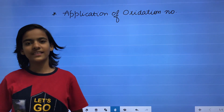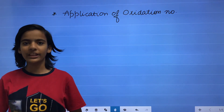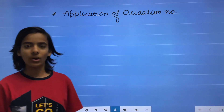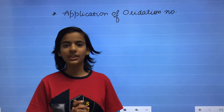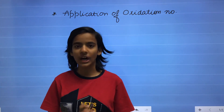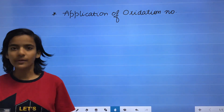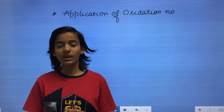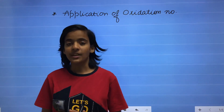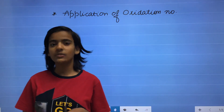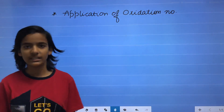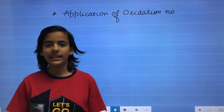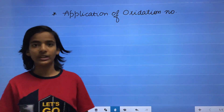Hello friends, in this video we will learn about the application of oxidation number. Oxidation number means the charge present on the atom in the combined state, known as oxidation number or oxidation state. By this property we can find out the acidic strength, basic strength, oxidizing and reducing agent, and equivalent weight.